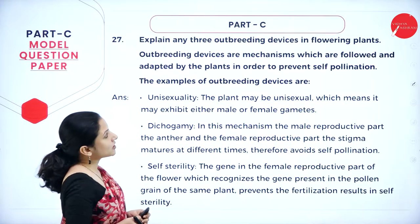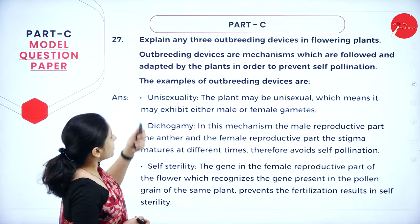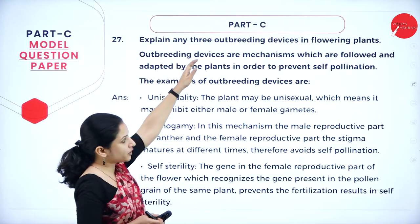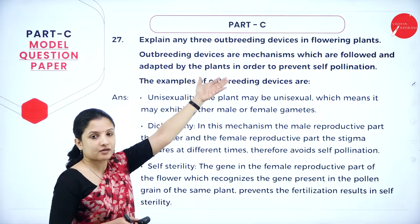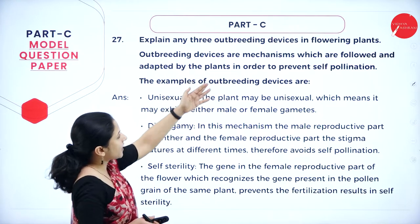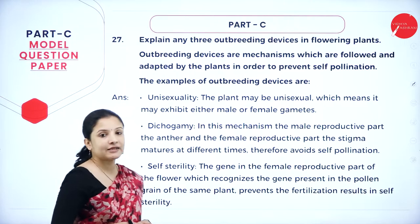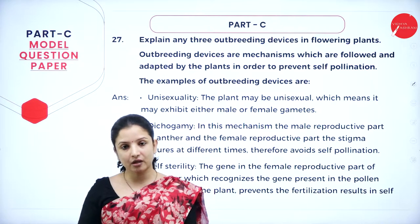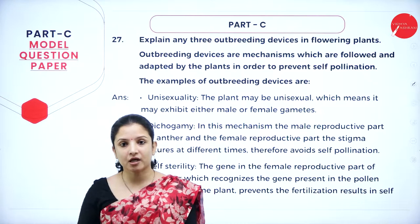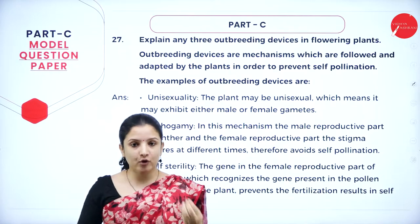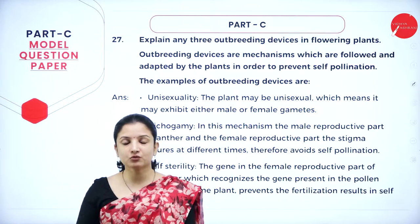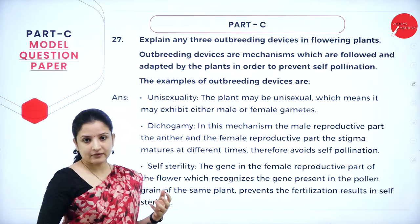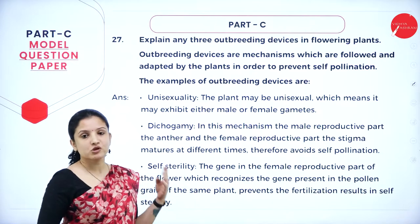Next question: explain any three outbreeding devices in flowering plants. If possible, write the definition — outbreeding devices are mechanisms adopted by plants to prevent self-pollination. These devices prevent plants from undergoing self-pollination, because if self-pollination continuously happens, it leads to inbreeding depression. There are many outbreeding devices; write any three for three marks.